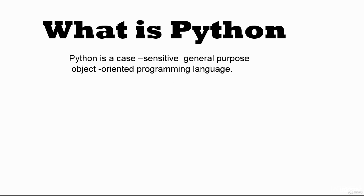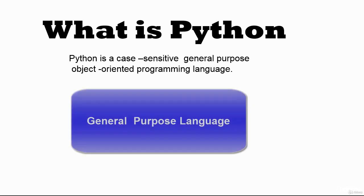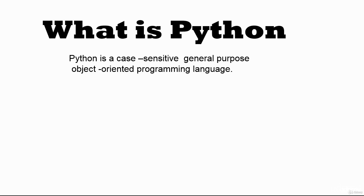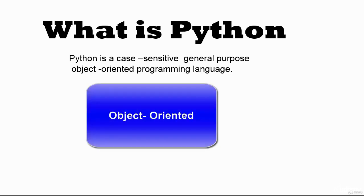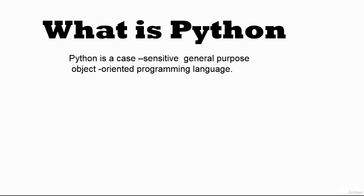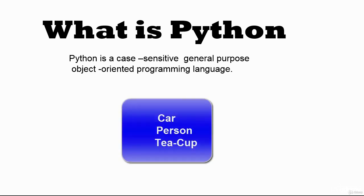Python is often referred to as a general-purpose language, meaning it can be used to do a variety of things, both big and small. Python is also an object-oriented programming language, which means it treats everything as an object — for example, in the real world, a car is an object, a person is an object, a teacup is an object.